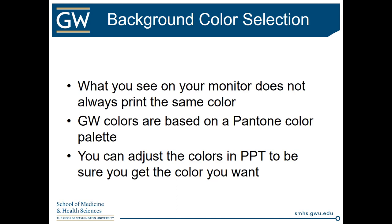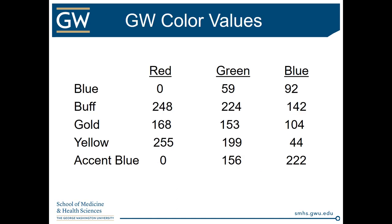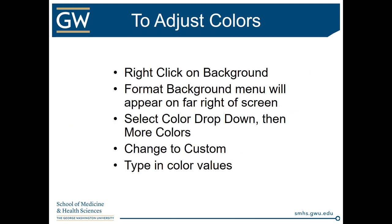In terms of selecting colors, what you see on your monitor does not always print the same color — it's likely to come out somewhat different when actually printed. GW's colors, if you decide to use those, are based on a Pantone color palette, and you can adjust the colors in PowerPoint to be sure you get exactly the color you've chosen. Here's a chart with the main colors of GW's color palette — each one has the Red, Green, and Blue values listed. You right-click on your background, the Format Background menu appears on the far right of the screen, select the color drop-down, choose More Colors, change to Custom, and type in the color values.